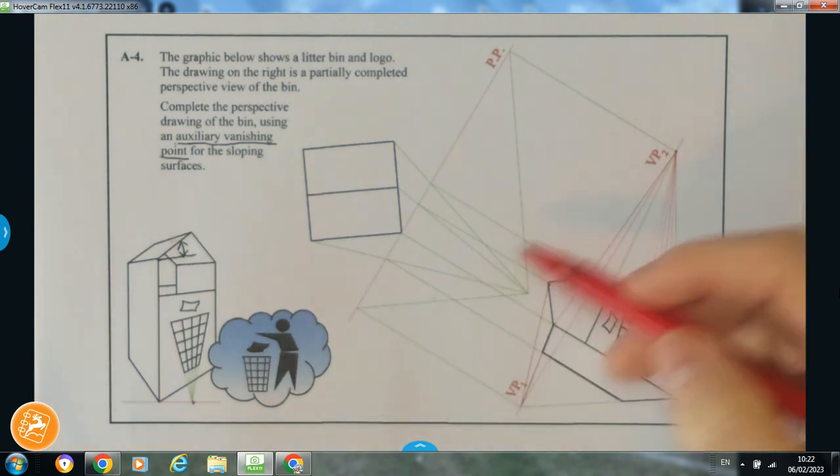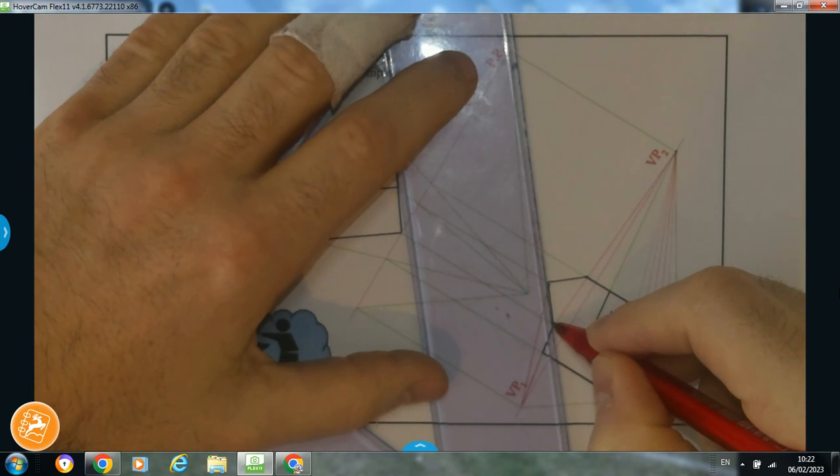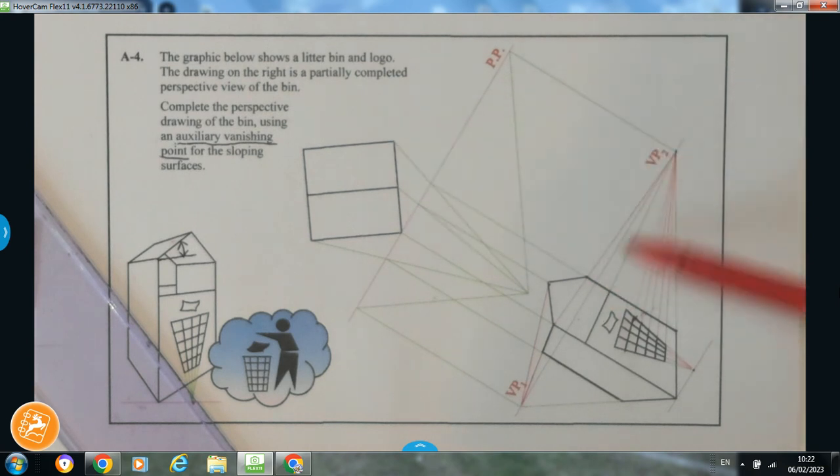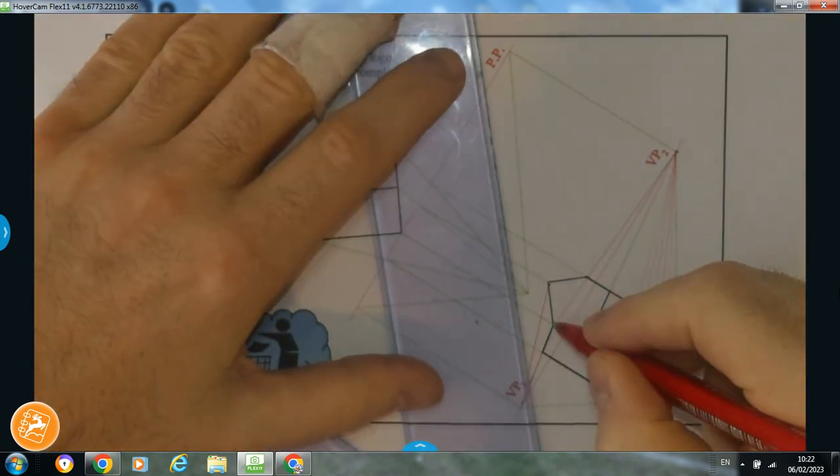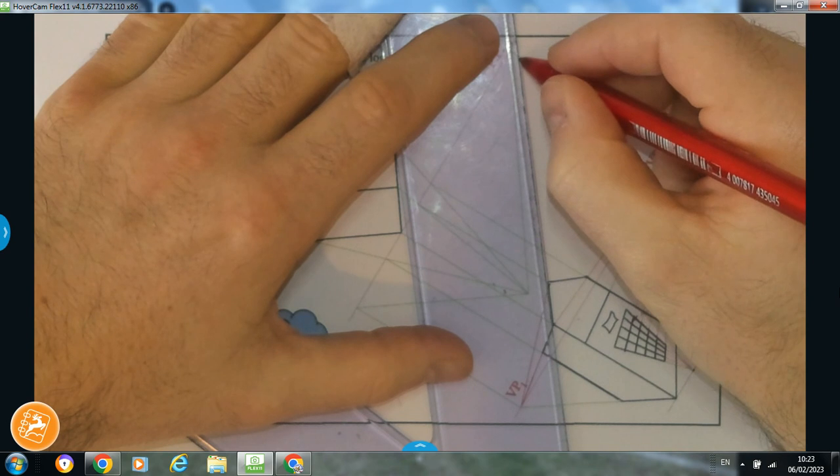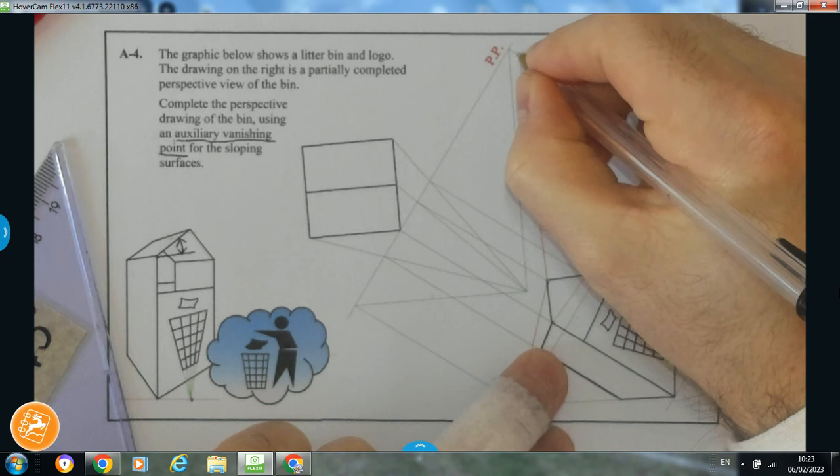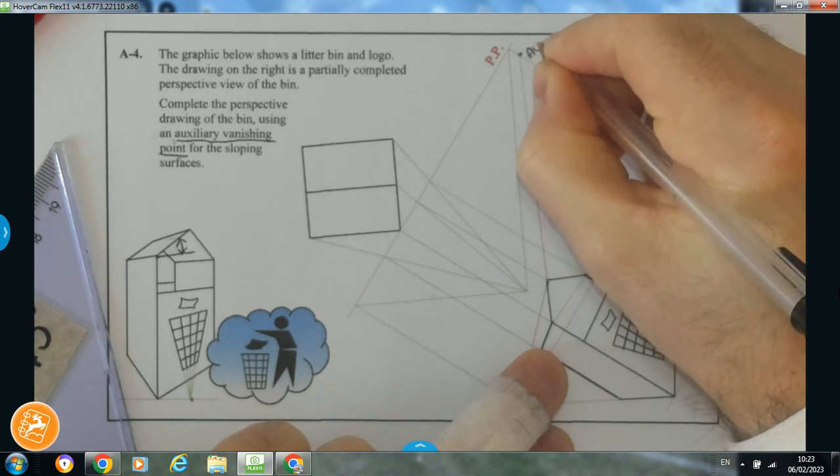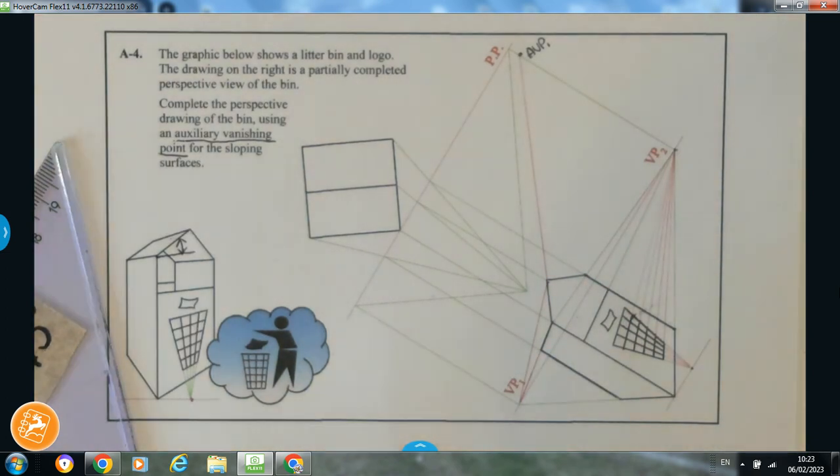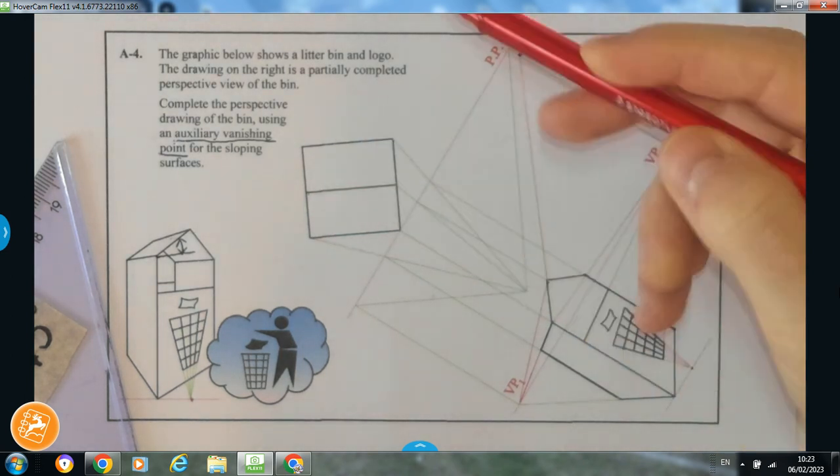Now, what's helpful to us here is they already give us one edge of that sloping surface. So often, sometimes you might actually be told to use the angle, but because we're given one edge, if I was to just extend that on all the way over, because the surface is running in this direction, the sloping surface is going in this direction, therefore it has to be on the VP2 side. So I'm going to extend that out all the way over to here. And you can see where that line there cuts through right up here. That there is going to give us an AVP, which I'm going to call it just AVP1. So that's our auxiliary vanishing point.